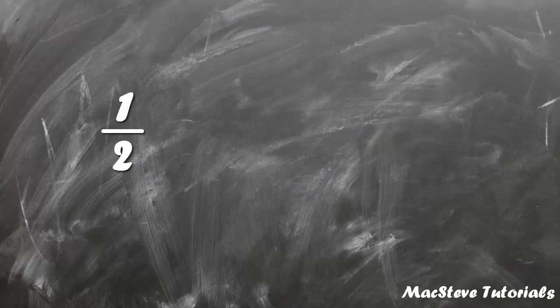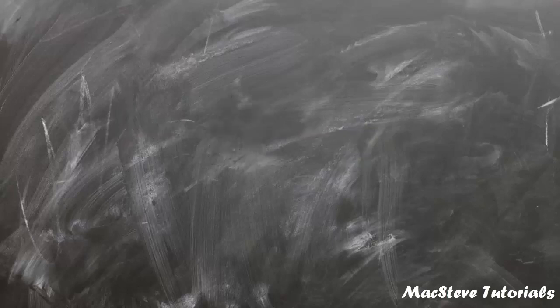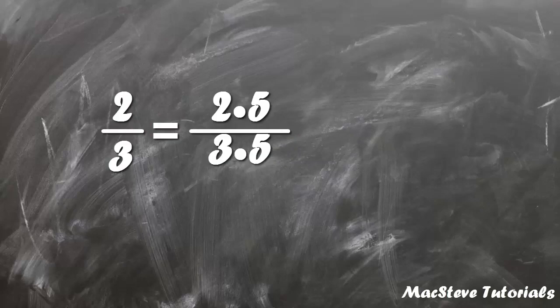So let's say you have one half. If you multiply both 1 and 2 by 3, you will get 3 sixths, and this is the same fraction as one half. The same also applies if you multiply 2 thirds by 5 — you will get 10 over 15.